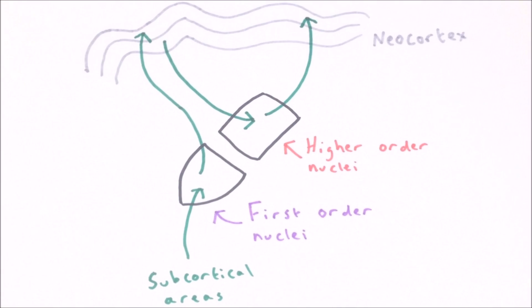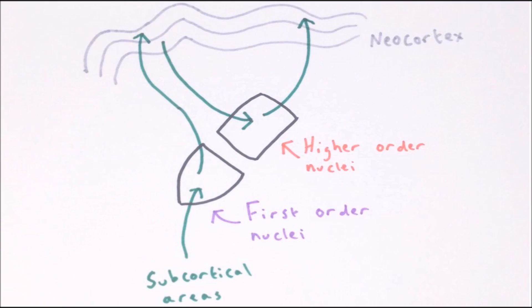In contrast, the drivers for higher order nuclei arise from the neocortex, and higher order nuclei relay information from one area of the cortex to another. For this reason, they are thought to relay information which has been through higher levels of processing.